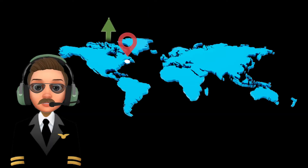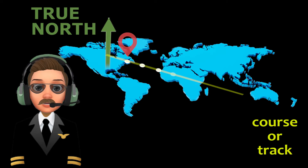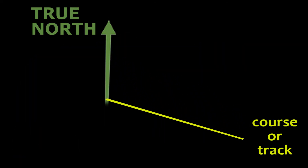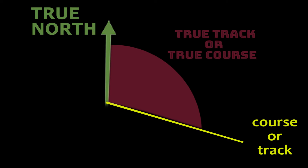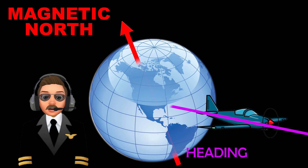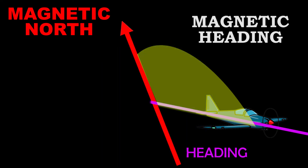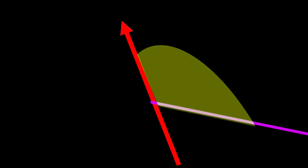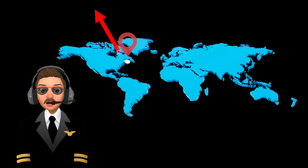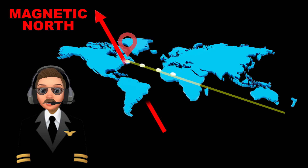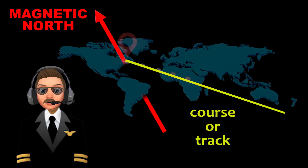The angle between the track or course and the true north is called true track or true course. The angle between the heading and the magnetic north is called magnetic heading. The angle between the track or course and the magnetic north is called magnetic track or magnetic course.